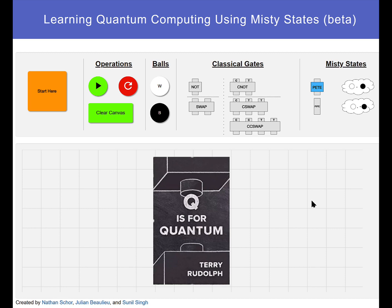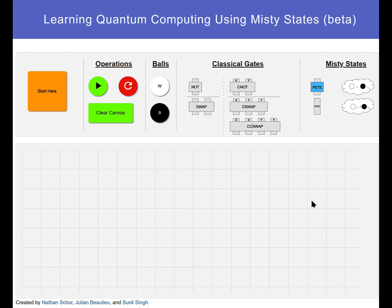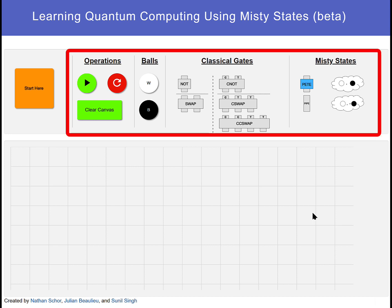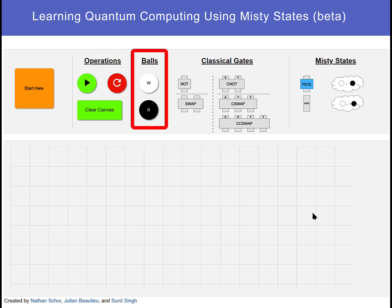So preliminary is complete. Let's jump into how to use the straightforward objects on this canvas to create the instructions used by both classical and quantum computers. Starting on the top, observe how the top row is segmented. Aside from the instructions under Start Here, the second of which you're watching now, are four sections: Operations, Balls, Classical Gates, and MISTI states.